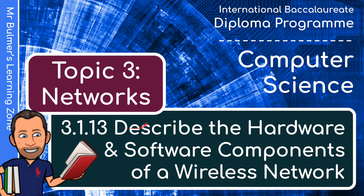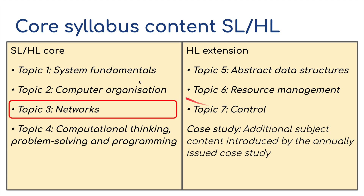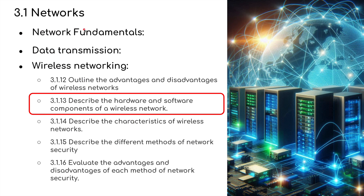Hello and welcome to video 13 for Topic 3 Networks. This time we're going to be describing the hardware and software components of a wireless network. This is for the IB Diploma Programme in Computer Science. Topic 3 is part of the four core units. We've done network fundamentals, data transmission, and now we're on to wireless networks.